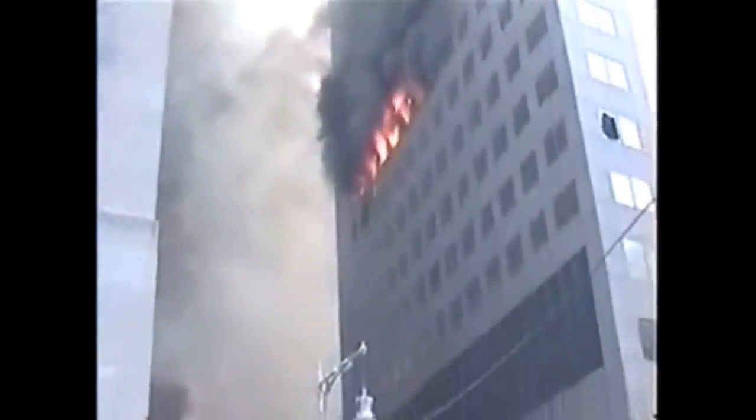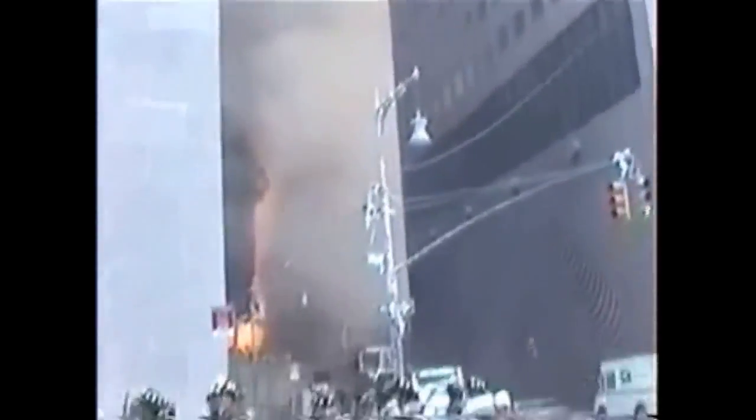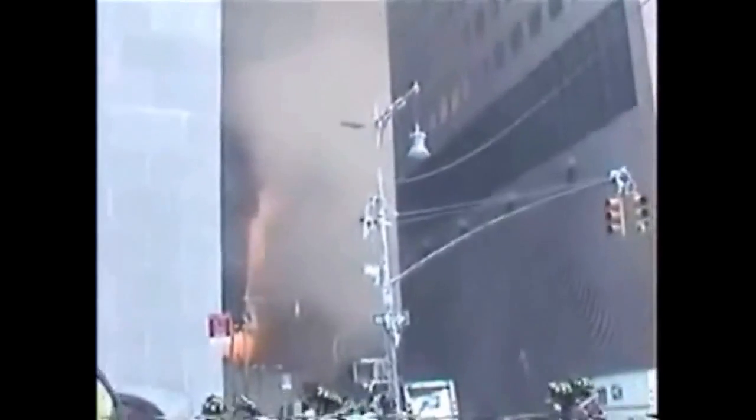And whilst there are clearly fires in World Trade Centre 7, they are isolated. Areas of the building are burning out and the fire is moving on toward new fuel sources. These two pictures were taken shortly before the collapse and they show no serious fire at the height at which NIST claimed the collapse initiated, but rather a burned out area that would actually be cooling.